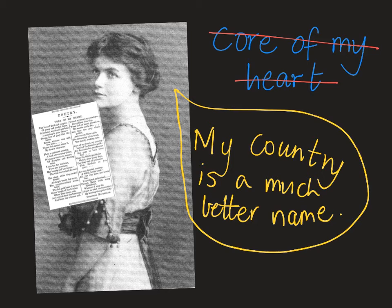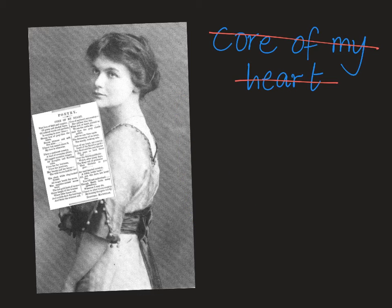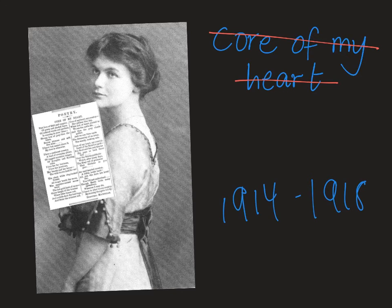It was first published in the London Spectator, which was a very popular and famous newspaper at the time, in 1908 — over a century ago. Importantly, this was written just before World War One, which was between 1914 and 1918. So this poem became a reminder of home to many Australian soldiers and gave them hope of returning to their homeland.